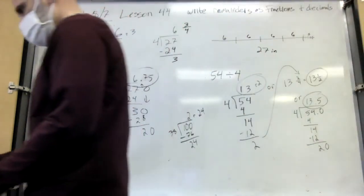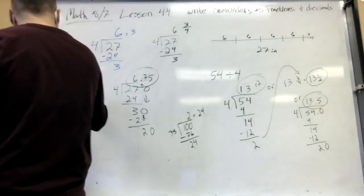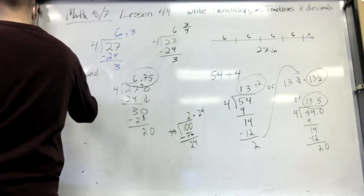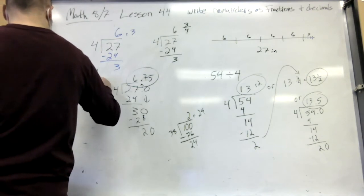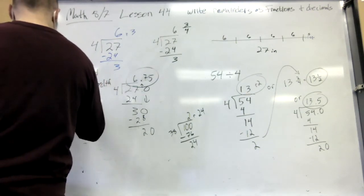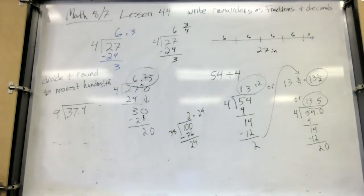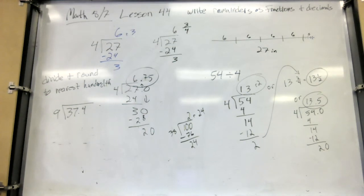What if you're told to divide and round to the nearest hundredth? 37.4 divided by 9, round to the nearest hundredth. This time you're not going to write it as a remainder or as a fraction — you're going to write it as a decimal and stop and round at the nearest hundredth. If you're rounding to the nearest hundredth, how many places do you have to divide to?